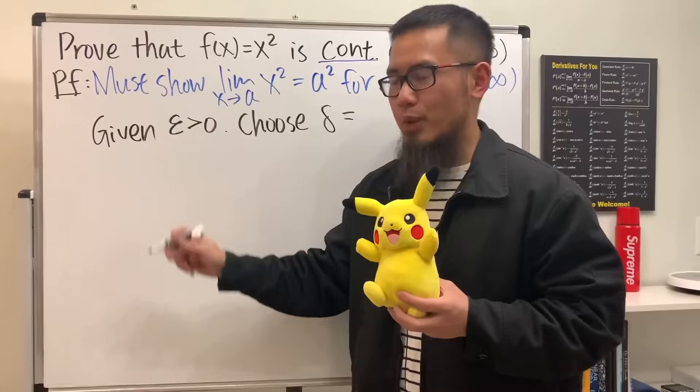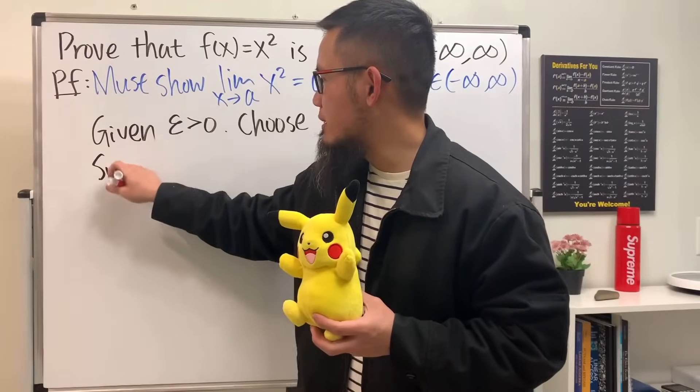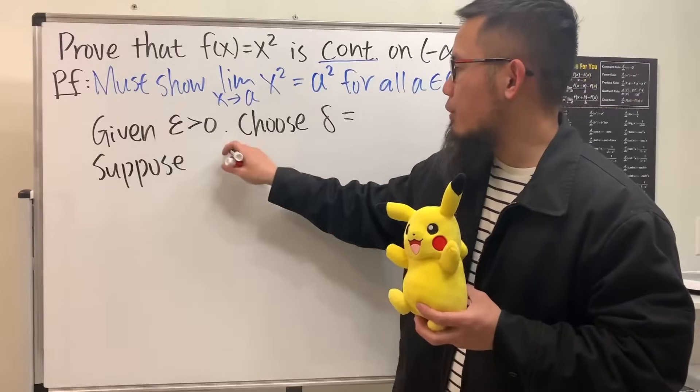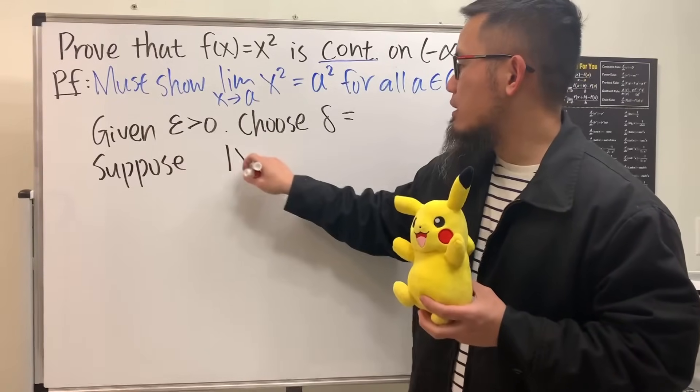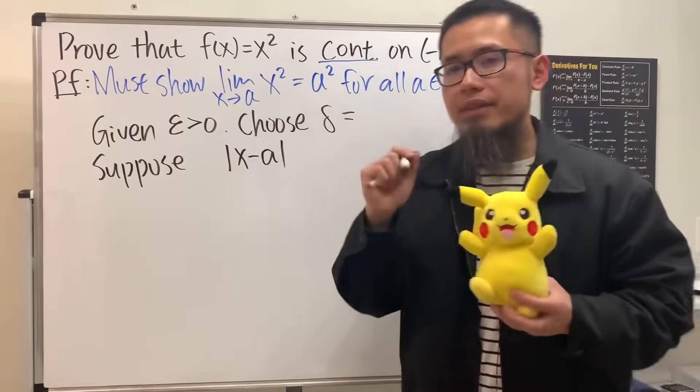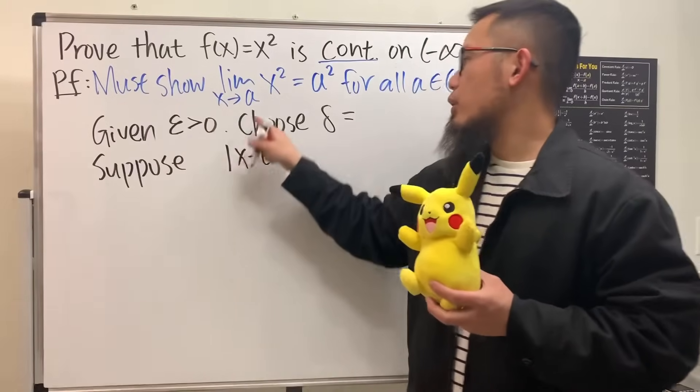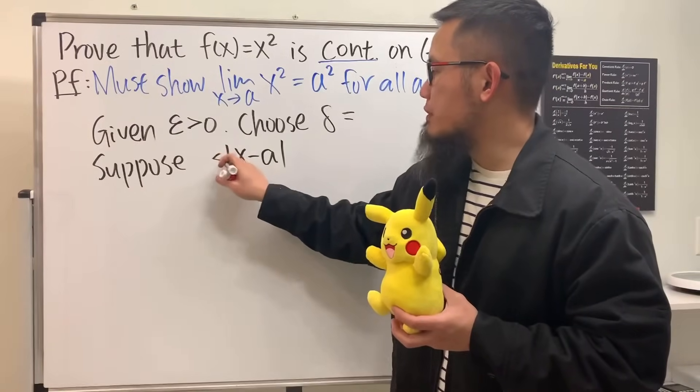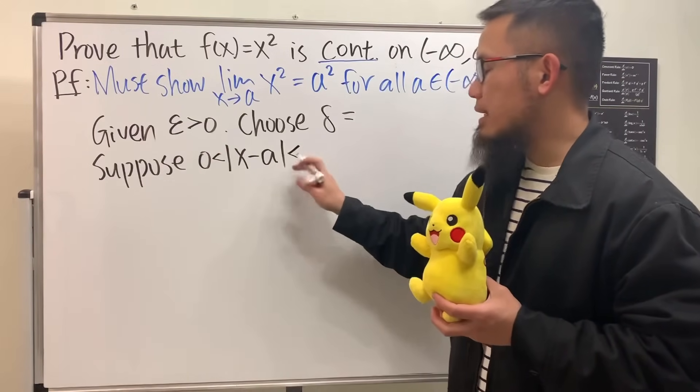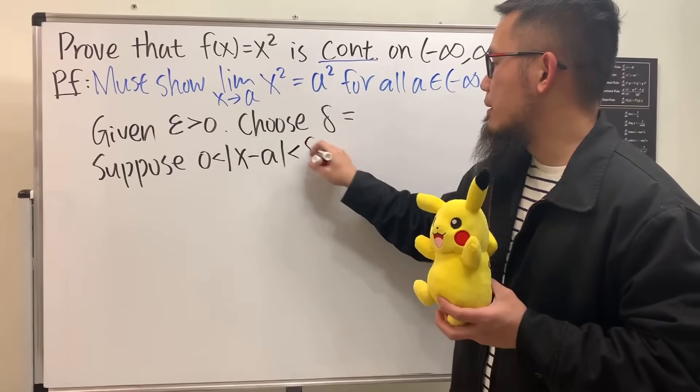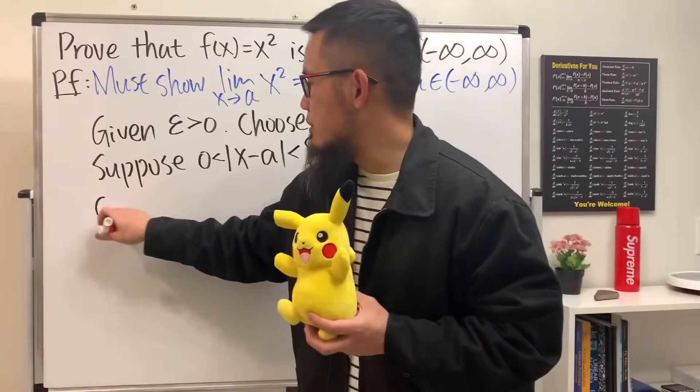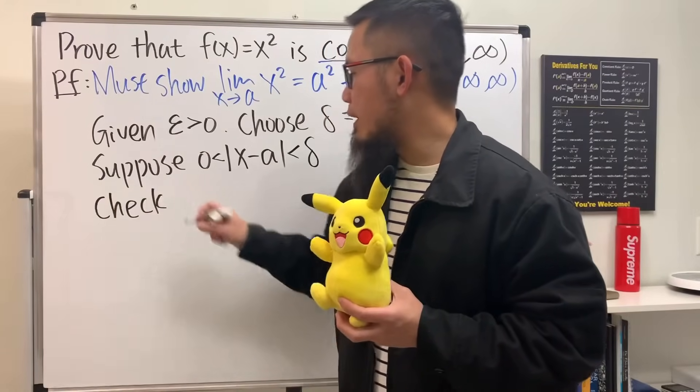All right, next what we do is we are going to say 'Suppose' and you have to remember this inequality. First you put down the absolute value, and then you do x minus a, so this is like saying the distance between x and also your given value a. And you have to make sure that this right here is in between zero and this right here has to be less than delta. So again, just write it down like this.